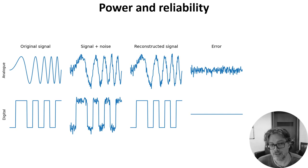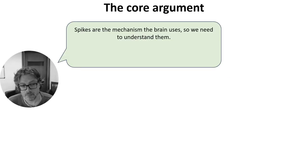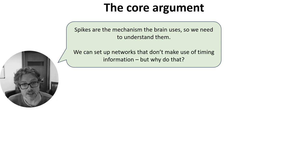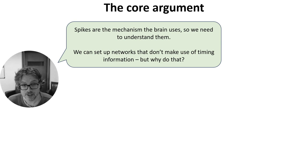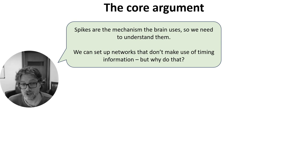Do we need to understand spikes to understand what the brain is doing? My point of view is that we know that the brain does use spikes, and so we need to understand them if we want to understand the brain. Even if we think that the brain only uses spikes for their rates, we have to understand how the brain could discard the non-rate information in spike trains. People have worked on that, showing how you can set up spiking neural networks so that they behave as if they were just conveying rates.